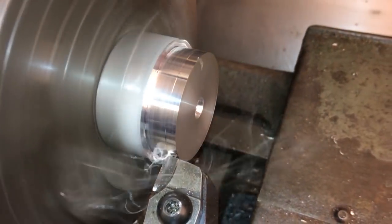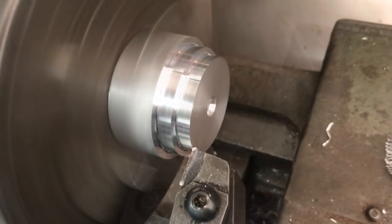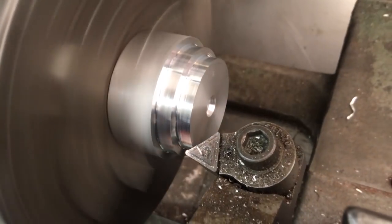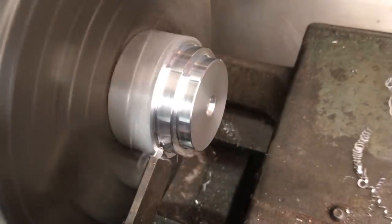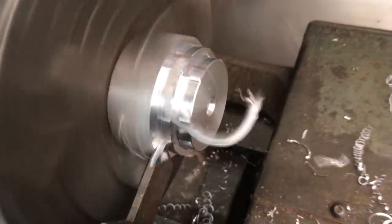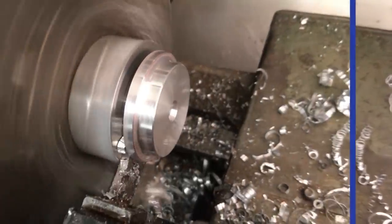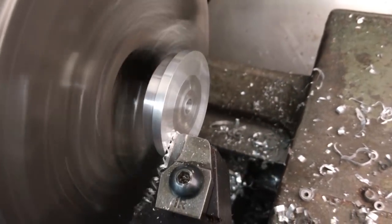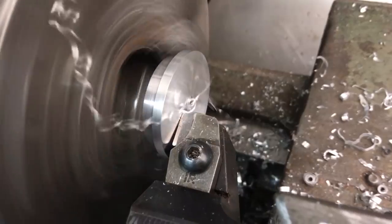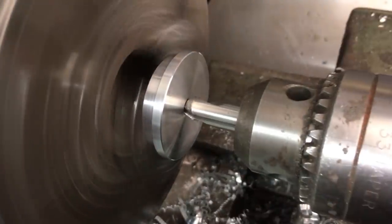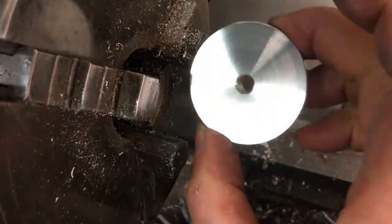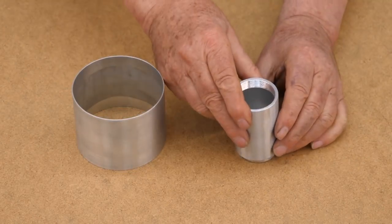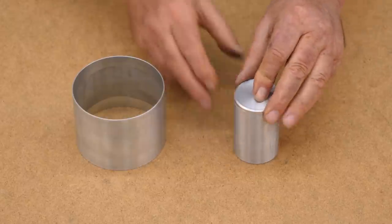Here I'm making sleeves for the components, allowing them to be positioned by a center bolt. The sleeves are made with a snug fit to ensure accurate centering on the fixture.